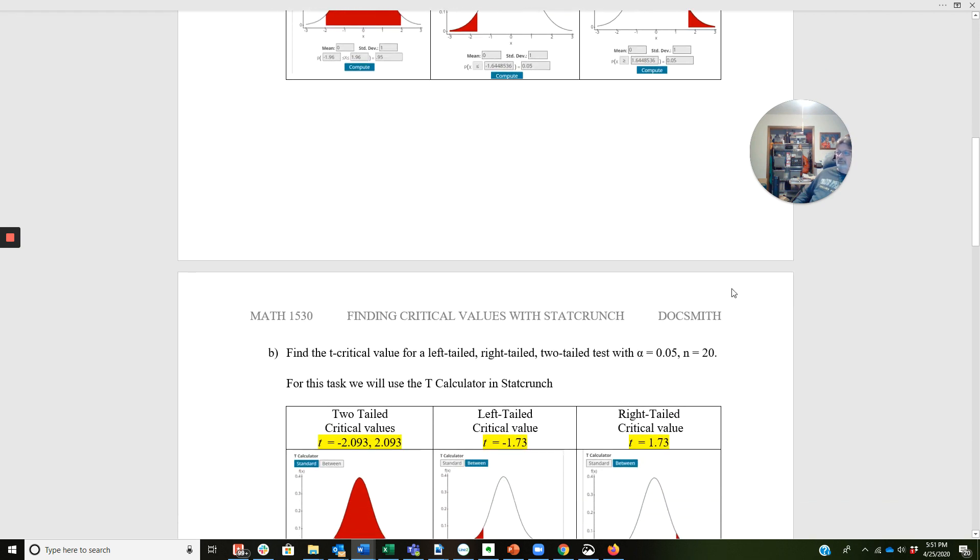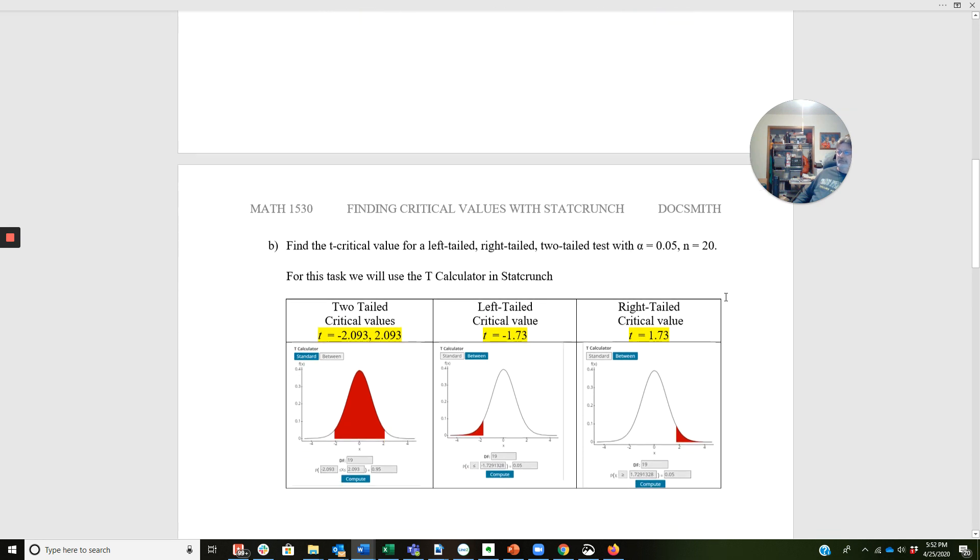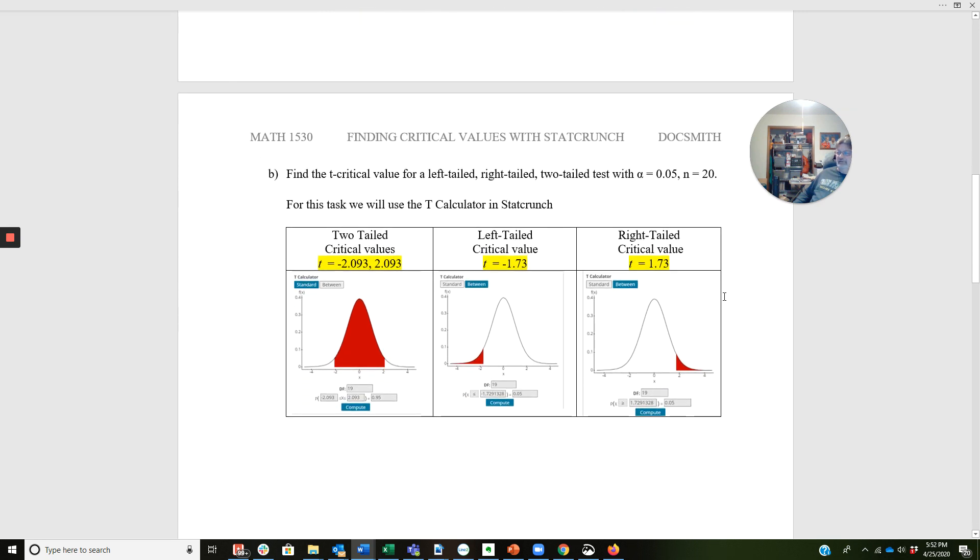Let's move on. Find the T critical value for a left-tailed, right-tailed, or two-tailed test with alpha equals 0.05 and N equals 20. Remember that we need the degrees of freedom. So we're going to use the T calculator in StatCrunch. I'm going to show you the displays. I'm going to do a homework problem with the T calculator, actually going to pull StatCrunch up and we're going to walk through one.